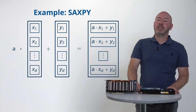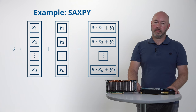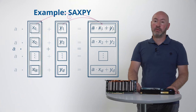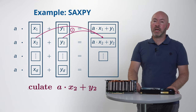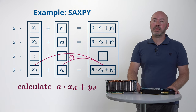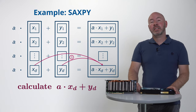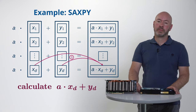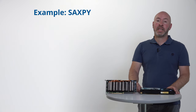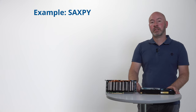A serial algorithm will calculate one entry after another, starting with the first, then the second, until we arrive at the last entry. This algorithm is implemented with a for loop and is often encountered on the CPU. The SAXPY problem is, however, fully parallelizable.